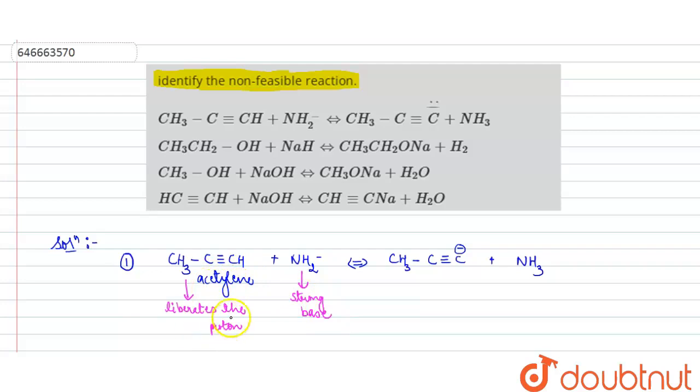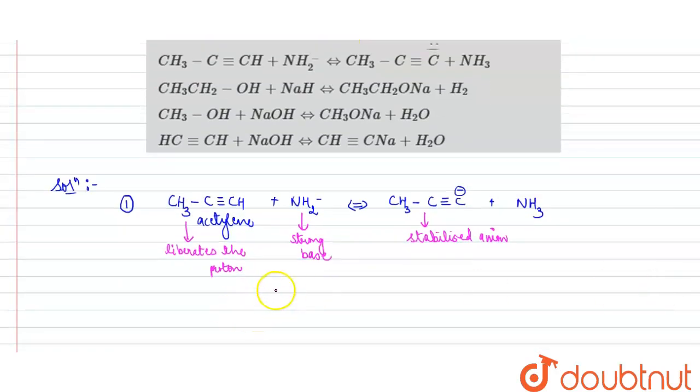Acetylene liberates the proton, and this particular acetylide ion, this negative charge on the ion gets stabilized. This is a stabilized anion. So yes, we can say that this particular reaction is feasible.